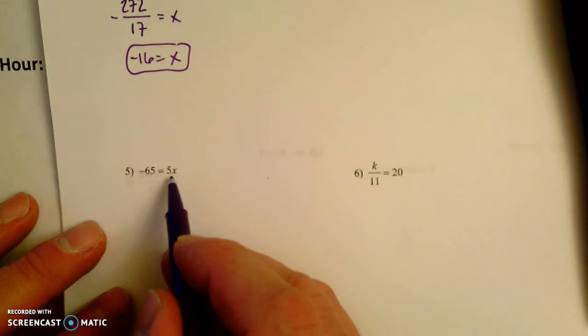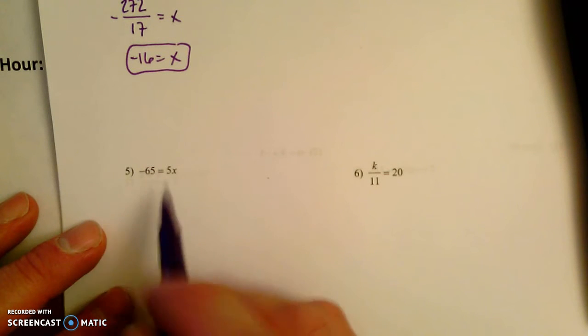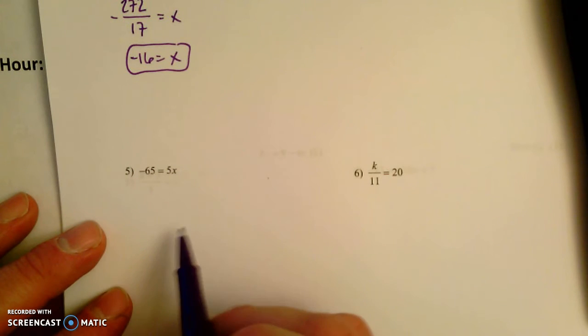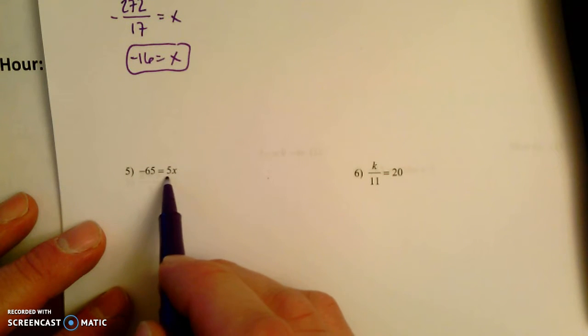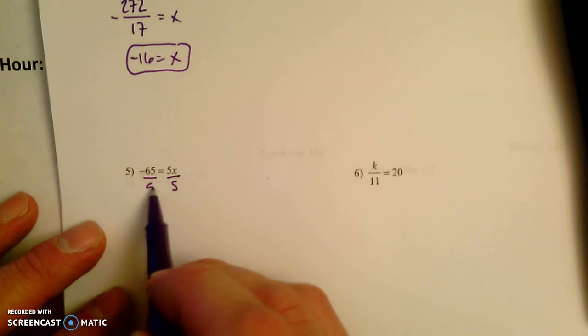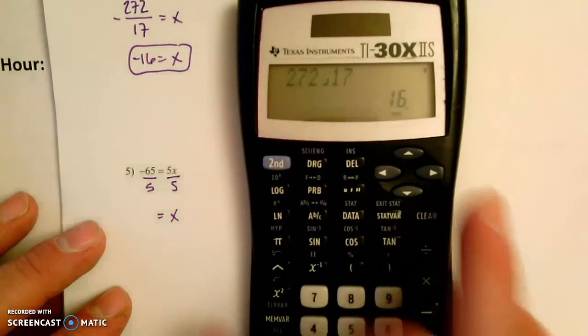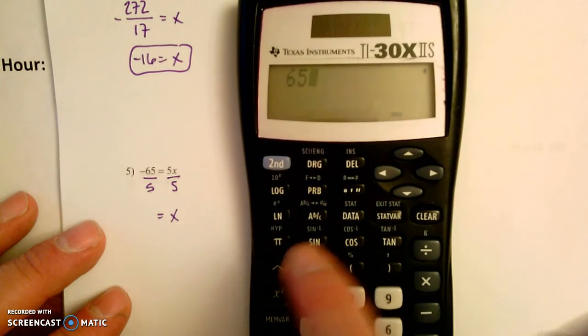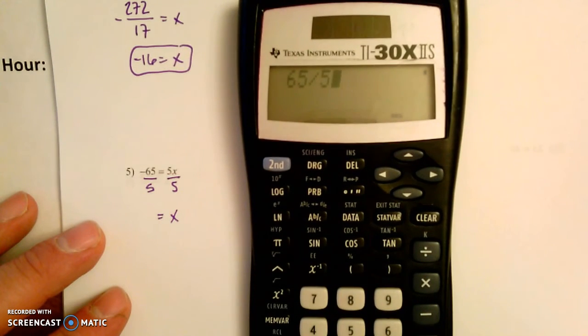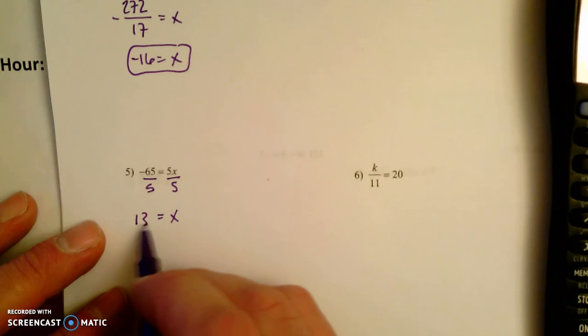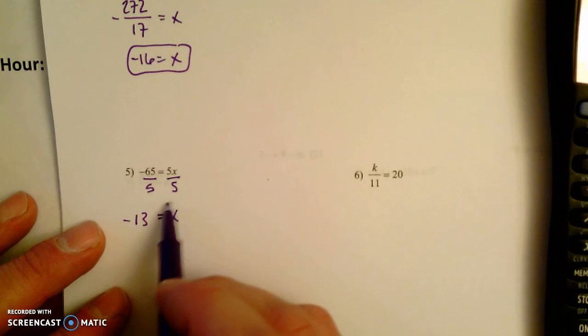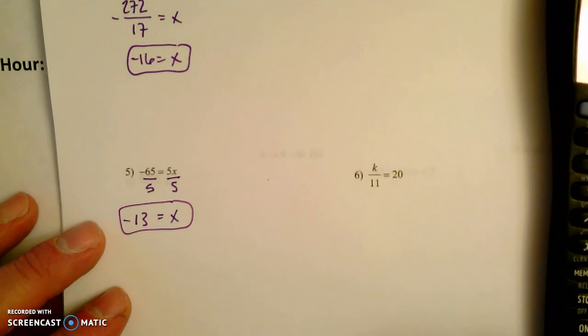Here, it's 5 times x equals negative 65. We want to get rid of this 5. To undo multiplying by 5, we have to divide by 5 on both sides. So that's going to give us x times 5 divided by 5 is just x. And over here, negative 65 divided by 5. Let's pull out our calculator here. 65 divided by 5, 13. Of course, that's a negative 13. So there, we're done.